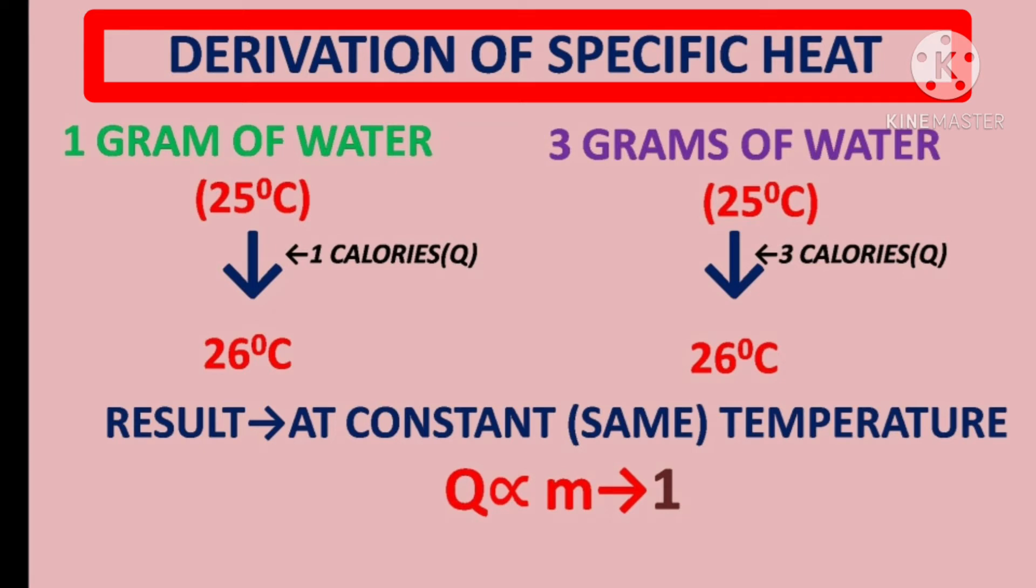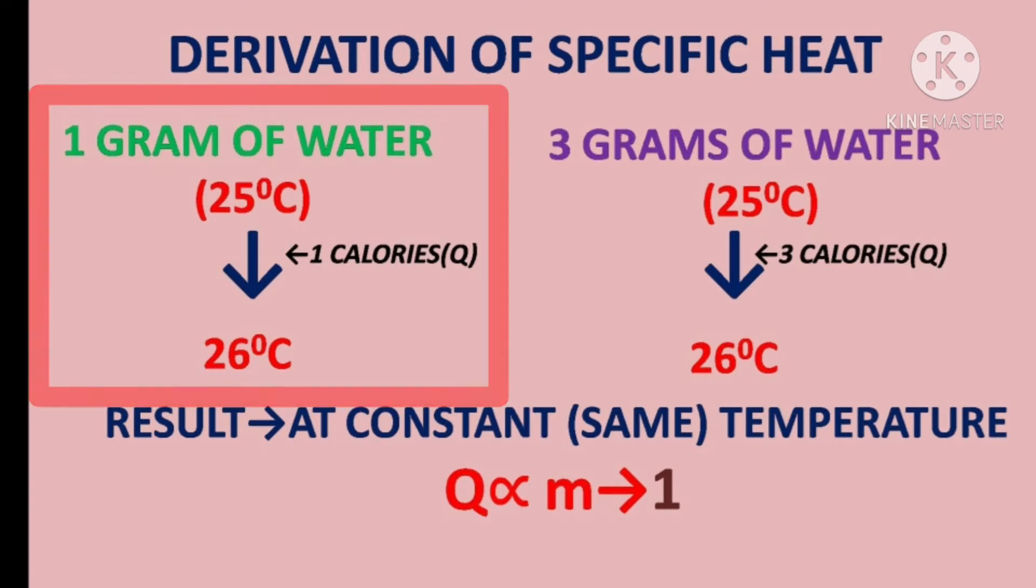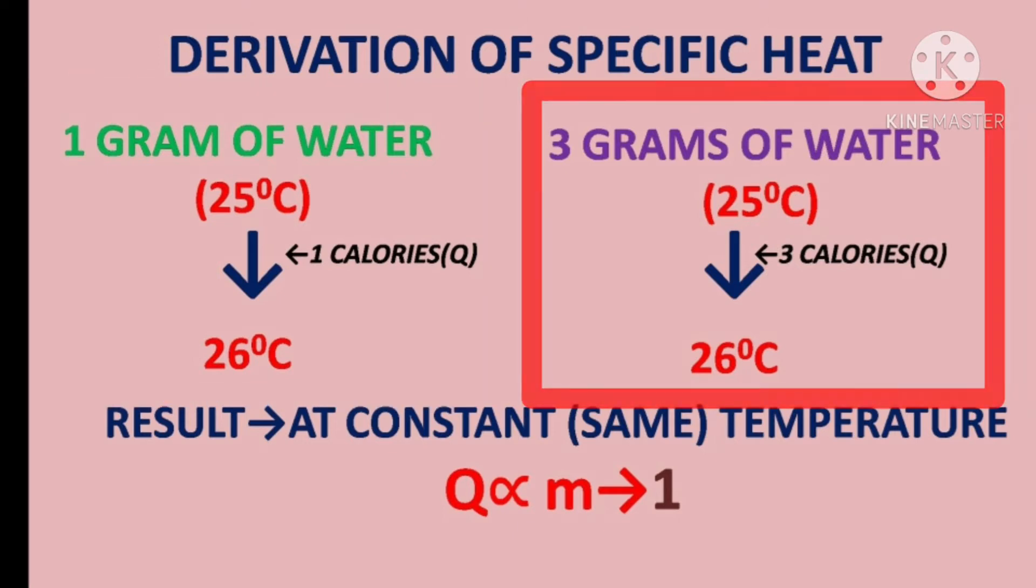Now I am going to explain derivation of specific heat. Here I have taken 1 gram of water at 25 degree Celsius and I applied heat 1 calorie to raise its temperature to 26 degree Celsius and also taken 3 grams of water at 25 degree Celsius and applied 3 calories heat to raise its temperature to 26 degree Celsius.